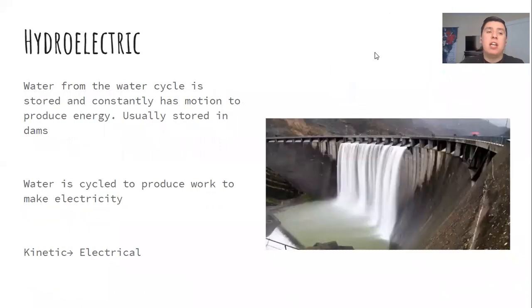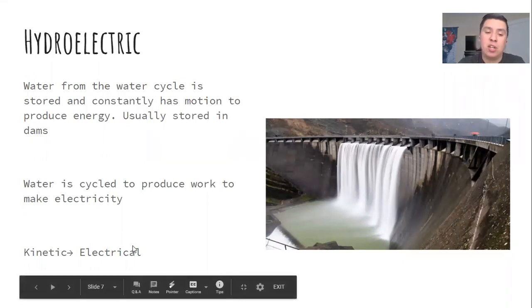After biomass is hydroelectric. This is energy coming from water and the motion of water. Water from the water cycle is stored in some place and constantly has different types of motion to produce energy. The common way to do this is through electrical dams. I don't know what dam this is in the picture, but Hoover Dam is a popular one. The water cycles around and moves, which produces work. Remember, work equals force times distance. That energy is changed into electrical energy. The kinetic energy of the water's movement turns into electrical energy.